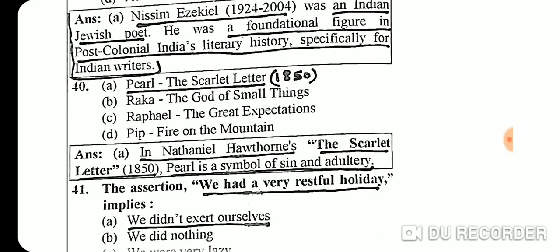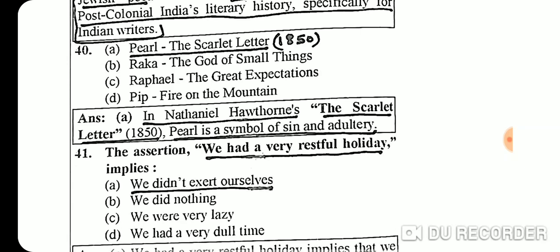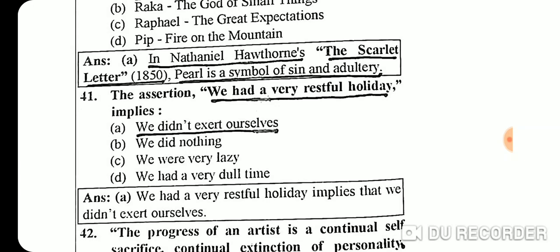Question 40: The correct option is Pearl from 'The Scarlet Letter,' which came in 1850. The author is Nathaniel Hawthorne, and Pearl is the symbol of sin and adultery in the novel.